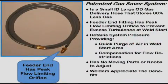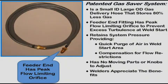The gas saver system is a patented device — a small ID gas hose that replaces the existing gas delivery hose from gas supply to wire feeder or welder. When welding stops, it holds 80% less gas than a conventional gas hose. It incorporates an orifice to limit peak flow rate at weld start, provides sufficient gas to quickly purge the weld start area for better weld start quality, and retains system pressure to automatically maintain the preset flow even when restrictions occur, such as spatter buildup. It is inexpensive, has no moving parts to maintain or adjust, and thousands are in use.